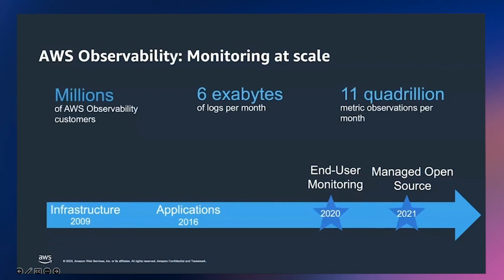Millions of AWS customers use AWS Observability services today. We also partner and integrate with a wide range of third-party observability providers and cloud management tools. To give you an idea of the scale we operate at: Amazon CloudWatch is used to monitor more than 11 quadrillion metric observations and ingests more than six hexabytes of logs. One quadrillion has 15 zeros — or one quadrillion equals 1,000 trillion. That's a huge number.